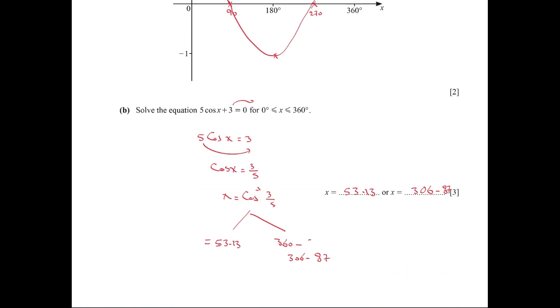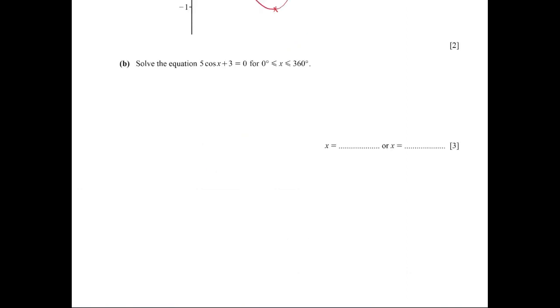Part b of the question: solve 5cos(x) + 3 = 0. So 5cos(x) = -3. Divide by 5: cos(x) = -3/5. Angle x = cos inverse of -3/5. We have two answers.